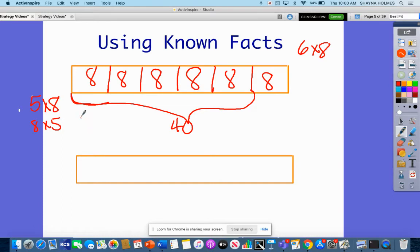I can count by five: 5, 10, 15, 20, 25, 30, 35, 40. Now I just have eight left, so 40 plus eight is 48. So six times eight is 48.